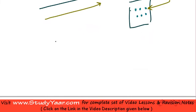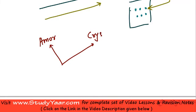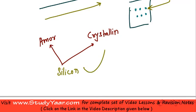It is not the case that an element can exist only in either amorphous or crystalline form. It can exist in both forms under different scenarios. One such example is silicon, which exists both as an amorphous solid and as a crystalline solid.